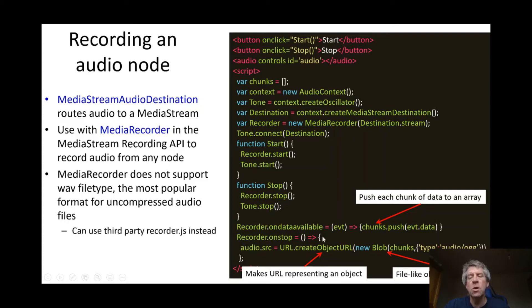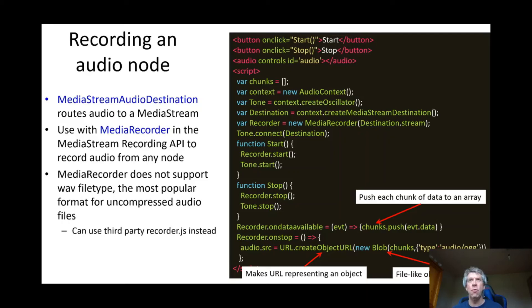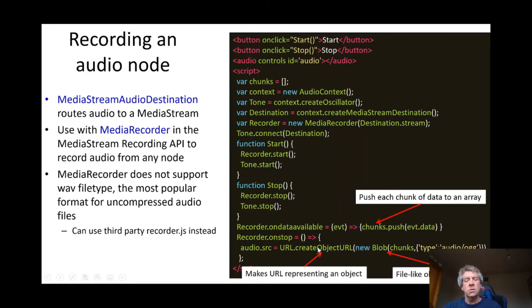When we click stop, we've got enough chunks. We call the Blob constructor — capital Blob — which creates a file-like object of raw data, essentially turning the array into a file. Here we specify an audio format, OGG, which is an open standard format for audio on the web. This is all part of the createObjectURL method, which takes this blob of raw audio and makes it a URL that can be downloaded and worked with.